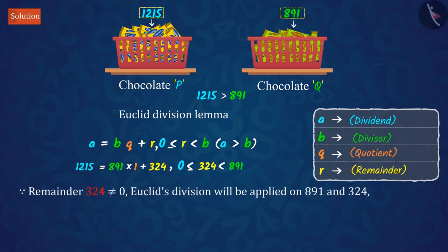Since the remainder is not equal to 0, we apply Euclid's division lemma again to divisor 891 and remainder 324. And by this, we get this value.